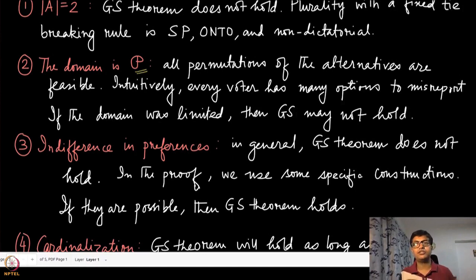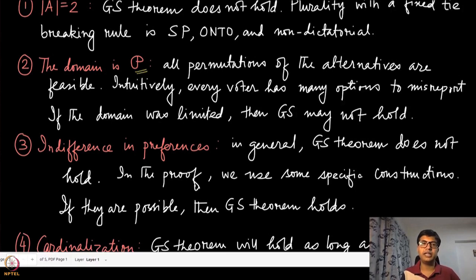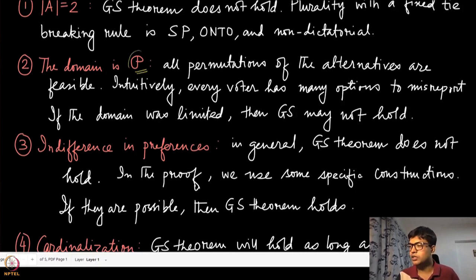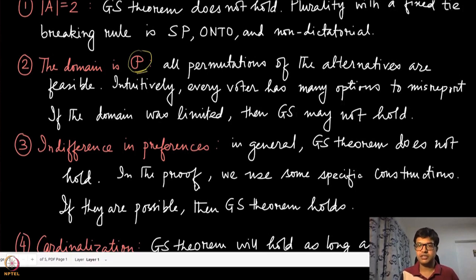One way to build intuition about this result is that the domain of the social choice function is too rich, and the voter has many options to misreport, which essentially gives rise to this impossibility result. Later on we will see that if your domain was limited — not all possible strict preferences were feasible — then the GS theorem may not hold, and we will see examples of that.